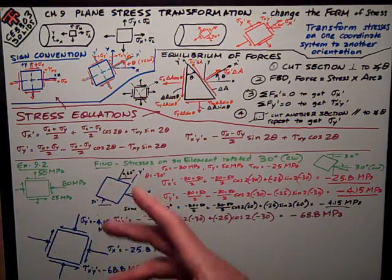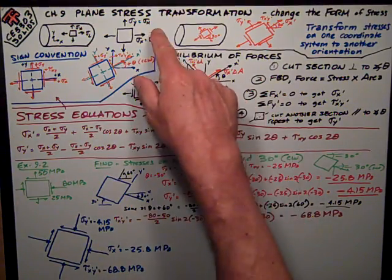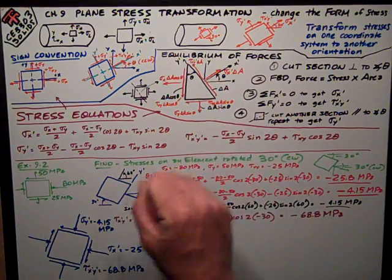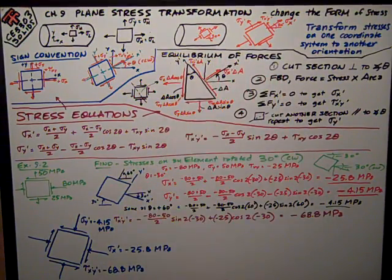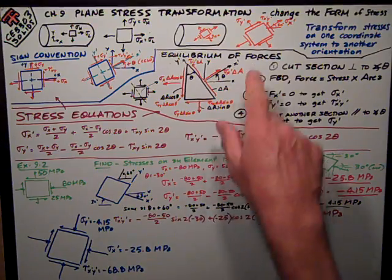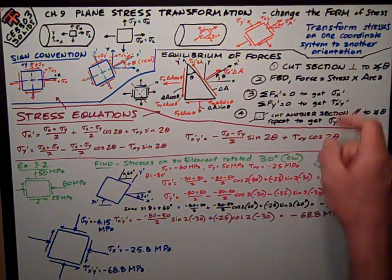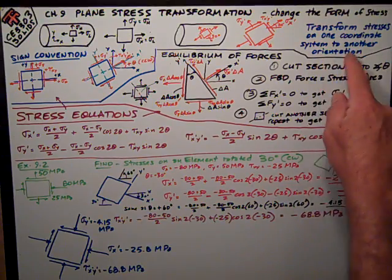It's the same state of stress on the thin wall pressure vessel, but the stresses vary according to the orientation within the body. So the purpose is to transform the stresses from one coordinate system to another orientation.